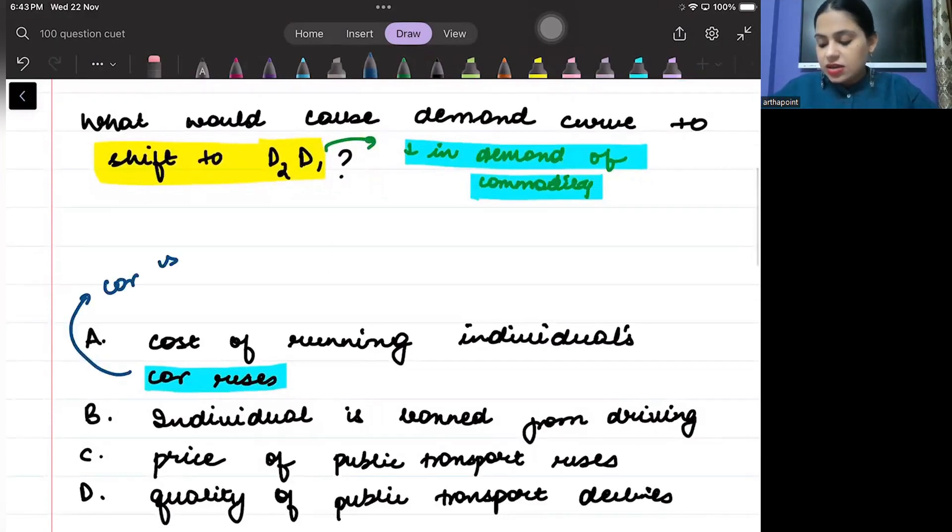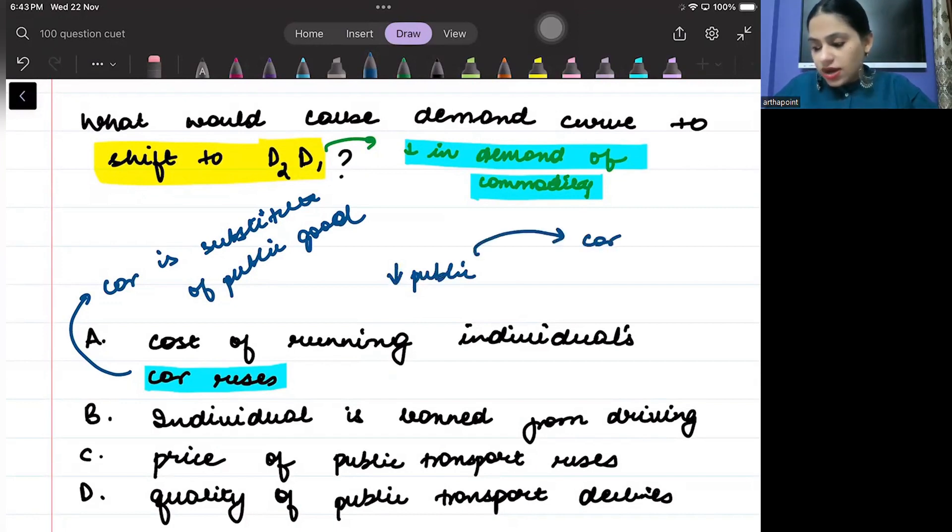So, I can say that car is substitute of public good. So, if I am decreasing the demand of public good, and I am switching to car, if I am going to the car, the cost of car should have reduced better.